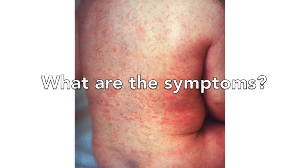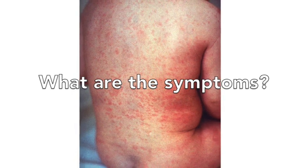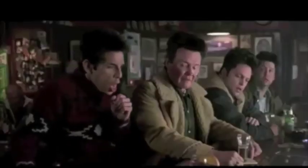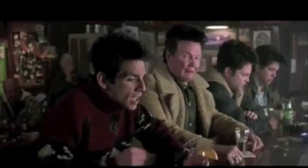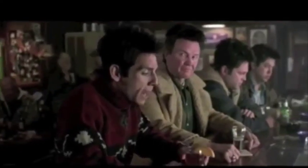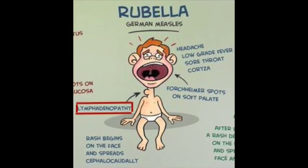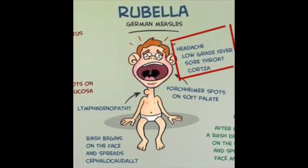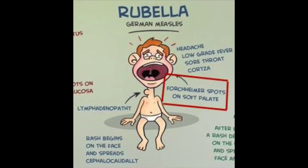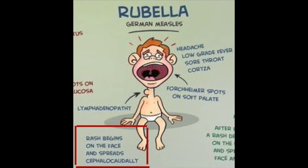Most individuals who are infected with the rubella virus only become mildly sick. They may experience inflamed or sore lymph nodes due to the virus replicating in that region. Symptoms may also include a headache, low-grade fever, sore throat, or cold-like symptoms. Small red dots may be seen on the soft palate inside the mouth. The infamous rash of the rubella virus starts on the face and spreads to the rest of the body.